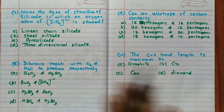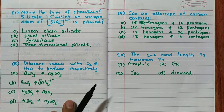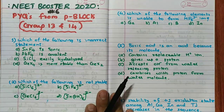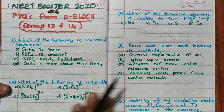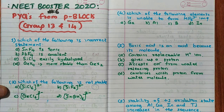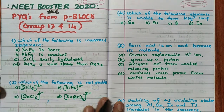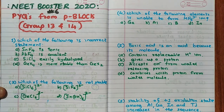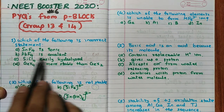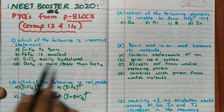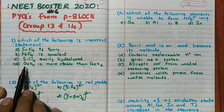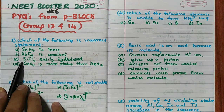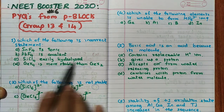Let us start with the first question: which of the following is an incorrect statement? The options are: SnF4 is ionic, PbF4 is covalent, SiCl4 is easily hydrolyzed, and GeX4 is more stable than GeX2.